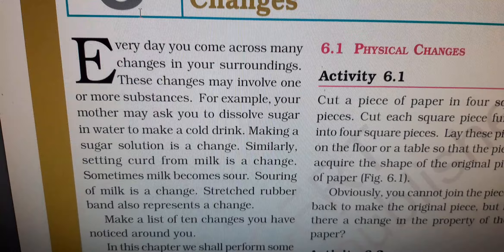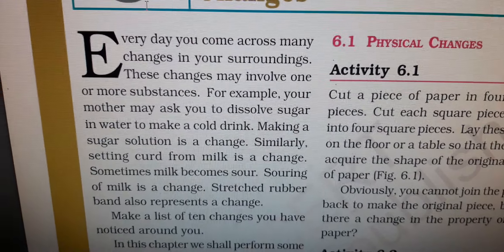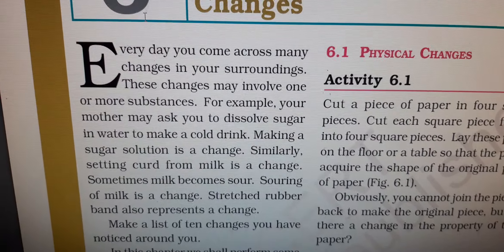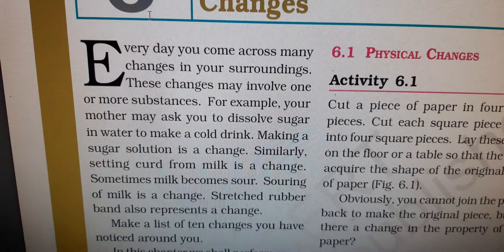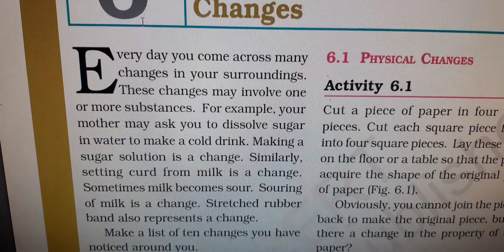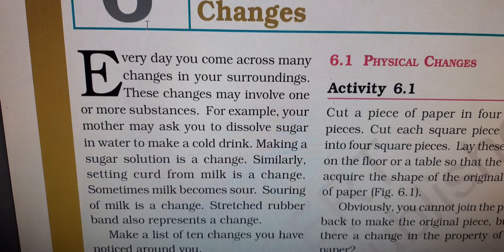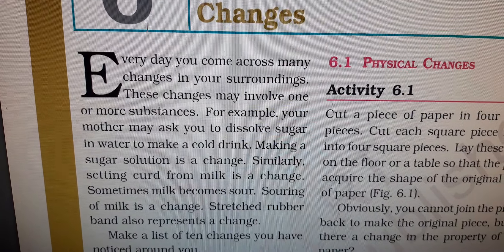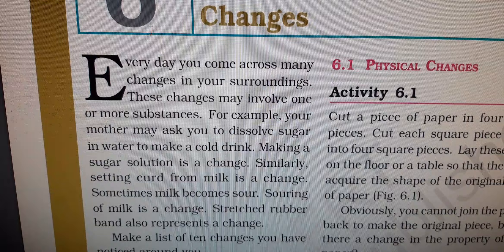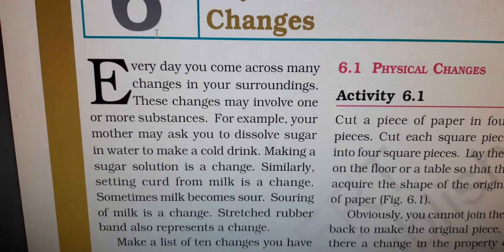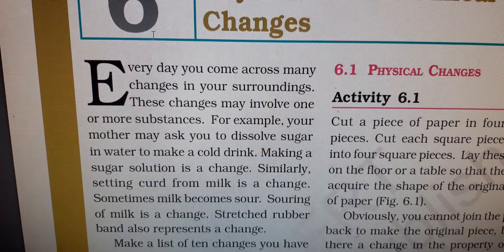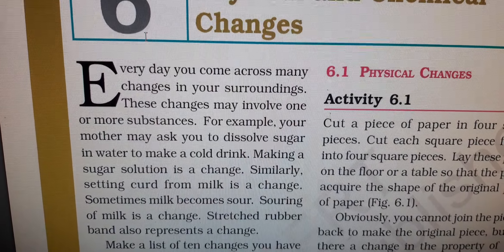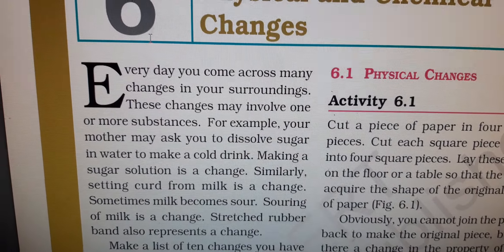In class 6 we read about changes around us, where we learned that some changes are slow changes. Slow changes include the weathering of rock — from the weathering of rock, soil is made, which is a very slow change. Formation of coal and petroleum also took millions and millions of years to form, so that is a very slow change.